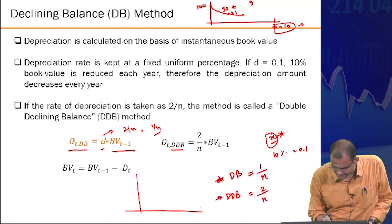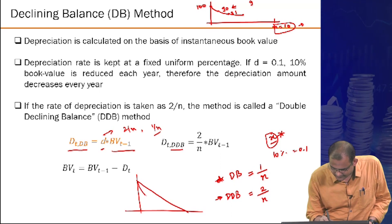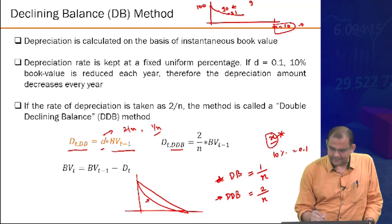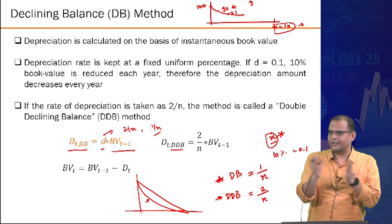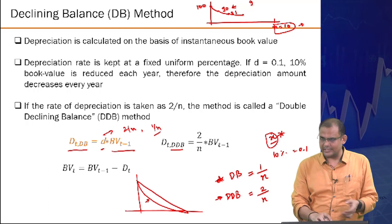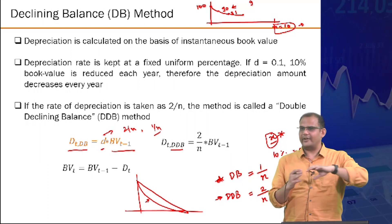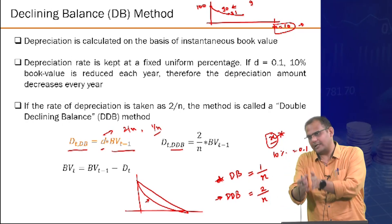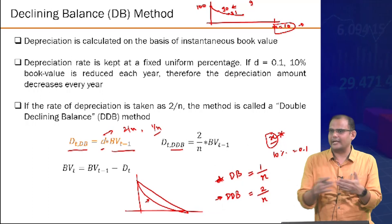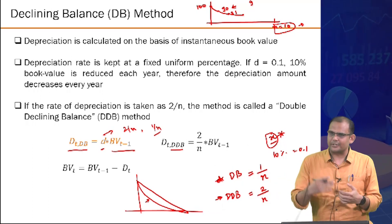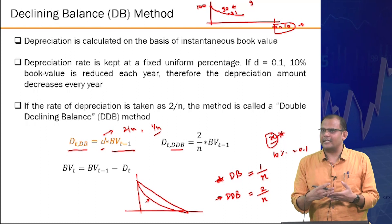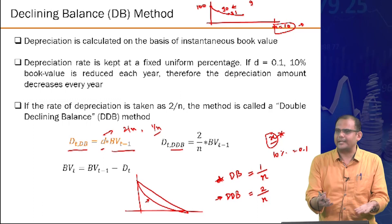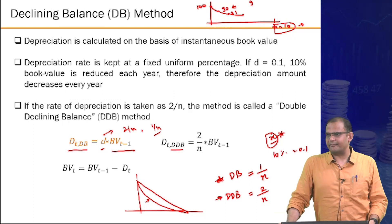Compared to the straight line method, the declining balance method is better for business because the present worth of the analysis is higher — larger tax benefits are realized earlier in the asset's life. Double declining balance provides even faster depreciation than DB, giving an even better net present worth for the business.